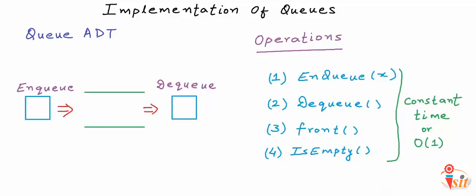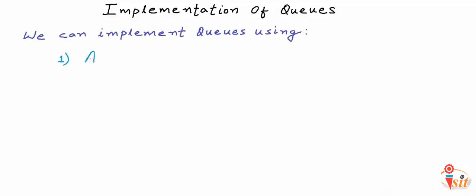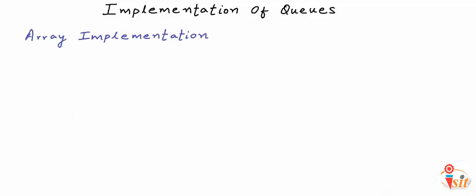A Queue is a special kind of list in which elements can be inserted or removed one at a time, and insertion and removal happen at different ends of the Queue. Just the way we did it for stack, we can add these constraints to some implementation of a list and create a Queue. There are two popular implementations of Queue: an array-based implementation and a linked list-based implementation.